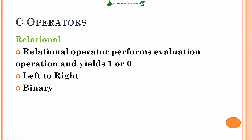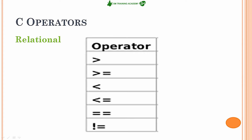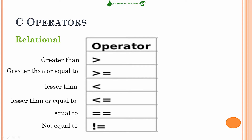The associativity of these operators is from left to right. If two different relational operators are provided in a single statement or expression, their associativity is left to right. These relational operators require two operands for proper evaluation. The six relational operators available in C language are: greater than, greater than or equal to, less than, less than or equal to, equal to, and not equal to.